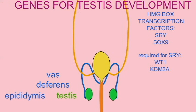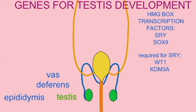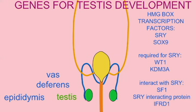In addition to these two transcription factors, there are transcription factors required to activate SRY, such as Wilms tumor gene 1 and KDM3 alpha, which is a lysine-specific demethylase that loosens histone attachments in addition to having a zinc finger transcription factor region. There are also proteins which have to interact with the SRY gene as it binds to DNA, such as SF1, the SRY-interacting protein 1, and IFRD1.